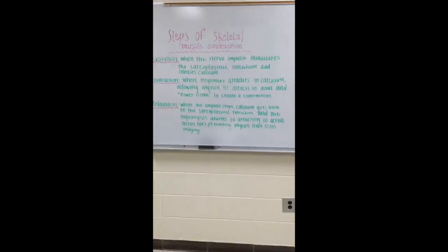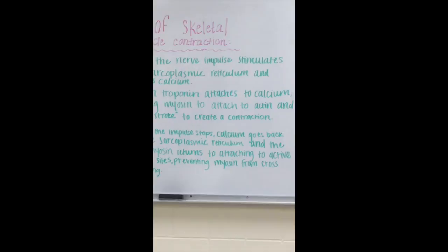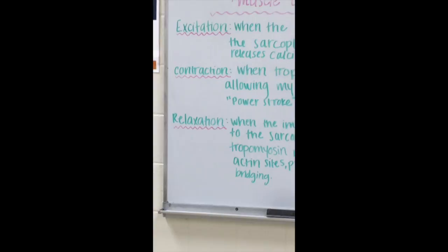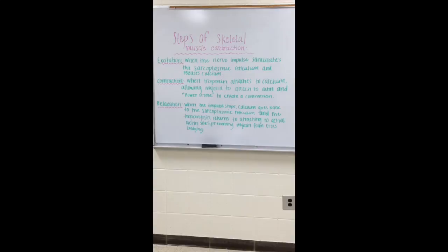These are the steps of skeletal muscle contraction. The first step is excitation. This happens when the brain stimulates the sarcoplasmic reticulum, releasing calcium. Contraction occurs when troponin attaches to the calcium, allowing the myosin heads to attach to the actin, which causes a power stroke in the contraction.